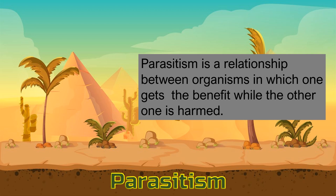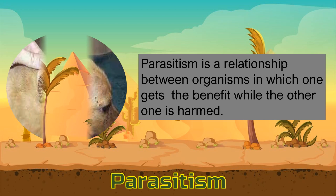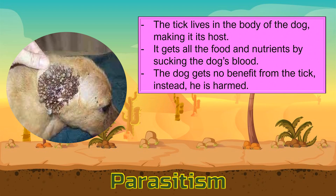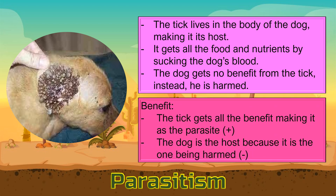Parasitism is a relationship between organisms in which one gets the benefit while the other one is harmed. The one that gets the benefit is the parasite while the other one being harmed is the host. Ito ang ecological relationship na ang isang organismo lang ang nakakatanggap ng benepisyo at ang tawag sa kanya ay parasite. Samantalang ang isa naman na napeperwisyo, na minsan ay nauwi sa kamatayan, ay ang host. For example, the tick lives in the body of the dog making it its host. It gets all the food and nutrients by sucking the dog's blood. The dog gets no benefit from the tick; instead, he is harmed. In this relationship, the tick gets all the benefit making it the parasite while the dog is the host because it is the one being harmed.